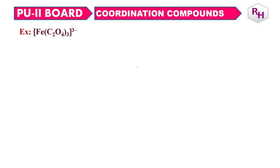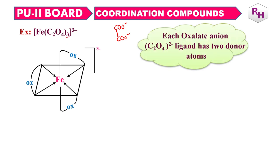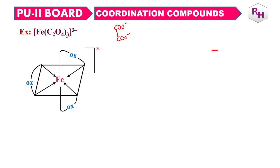Last example: Fe(C2O4)3. C2O4 is oxalate — COO⁻ bonded to COO⁻. There are 2 donor atoms per oxalate ligand, so 3 ligands times 2 gives 6 donor atoms, meaning 6 coordinate bonds. Hence the coordination number is 6. Very easy to calculate.